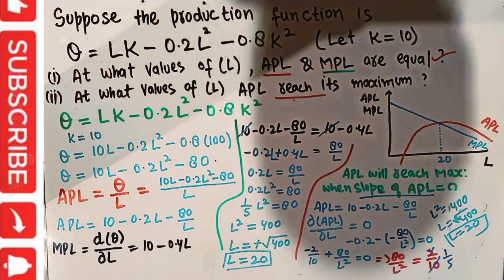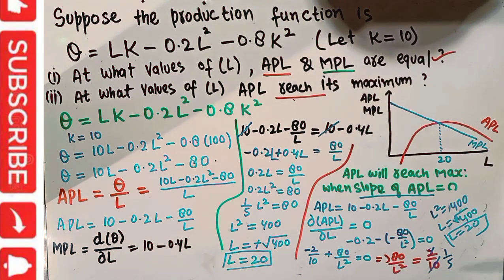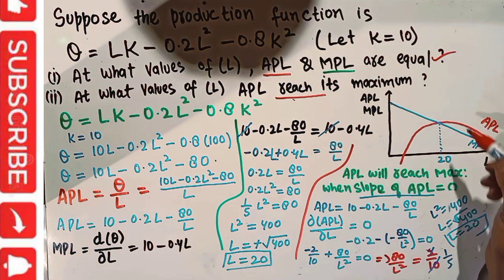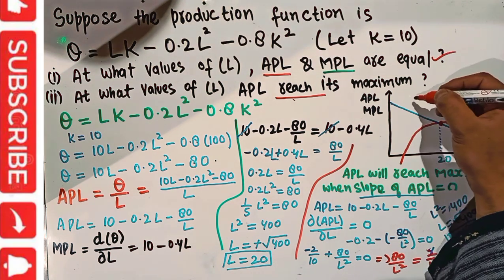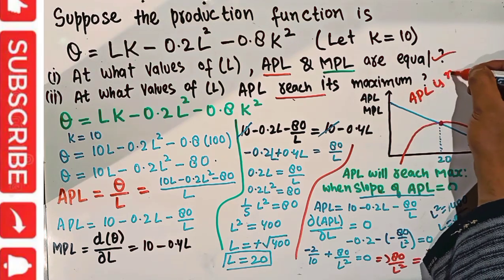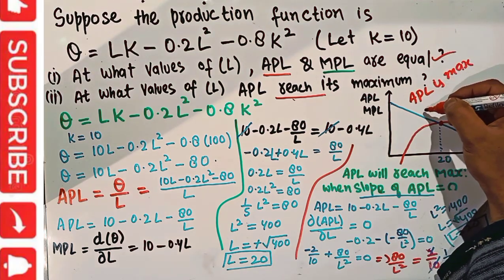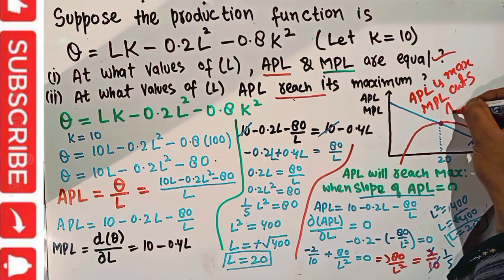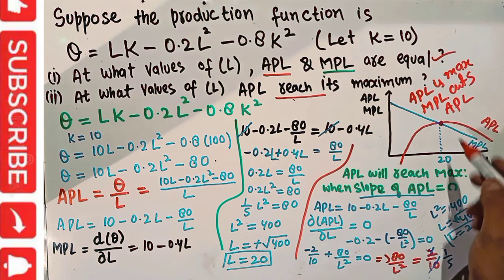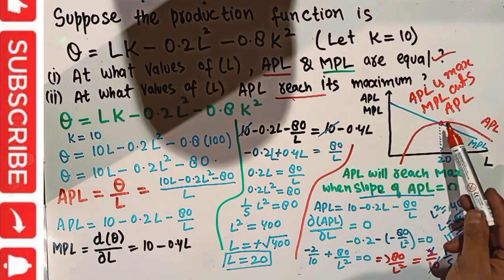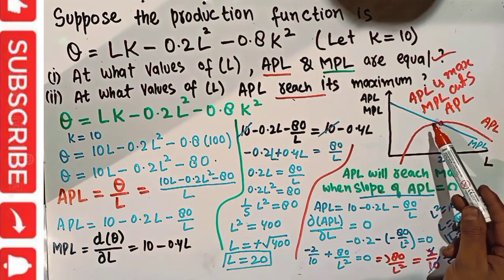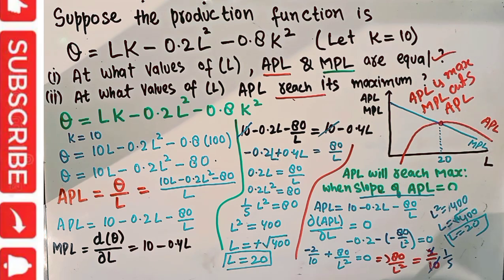So the average product of labor is maximum when we have 20 units of labor. You can see graphically that APL is maximum at the point where MPL intersects APL — coincidentally, this is also the point where MPL and APL are equal, which we found in part one. Thank you.